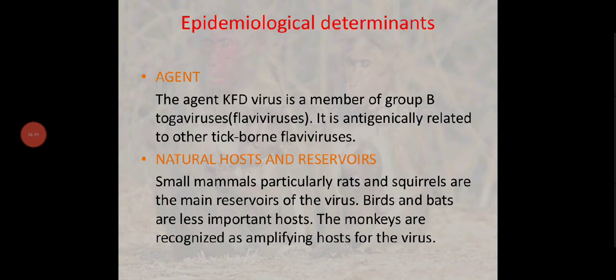The KFD virus is a member of group B togaviruses, that is Flaviviruses. It is antigenically related to other tick-borne Flaviviruses. The natural hosts and reservoirs are small mammals — particularly rats and squirrels — which are the main reservoirs of the virus. Birds and bats are less important hosts. Monkeys are recognized as amplifying hosts for the virus.